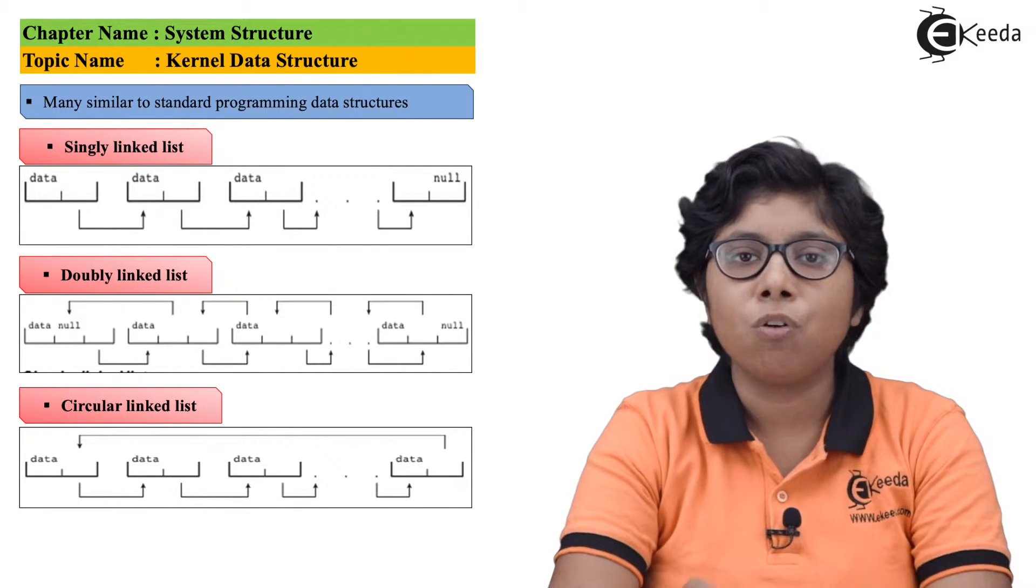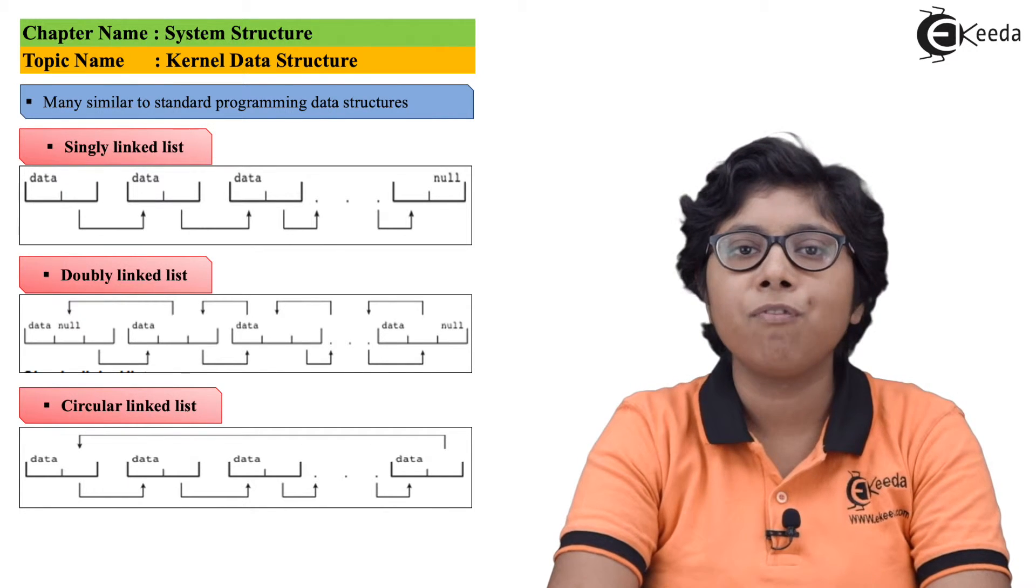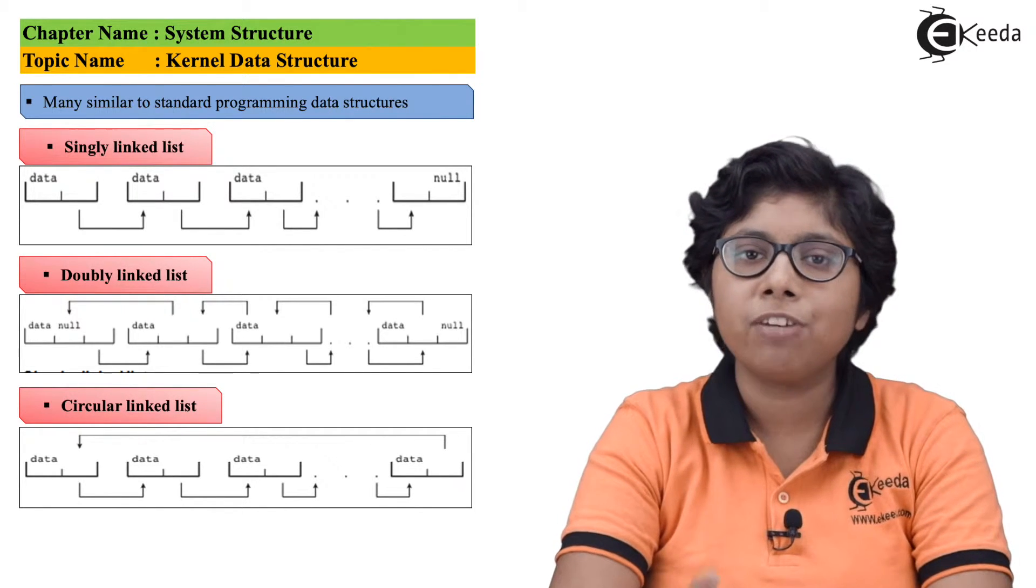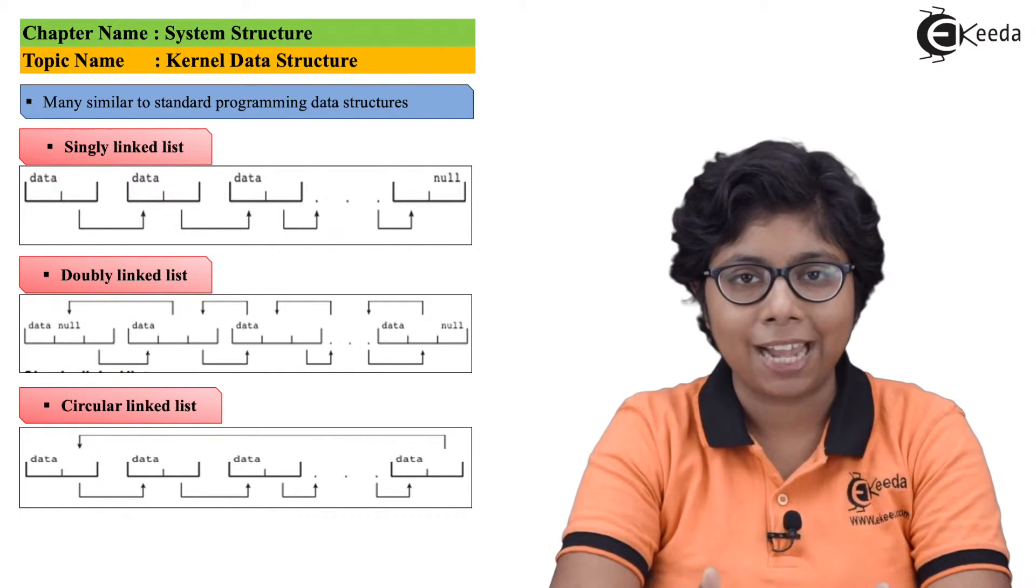The stack is used when a function gets called. The parameters, the local variables all are pushed to the stack at the time of a function call. And when returning from that function call, these items are popped off back from the stack.